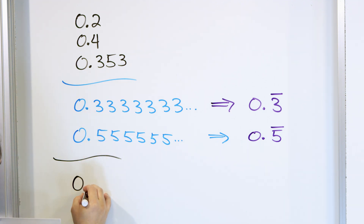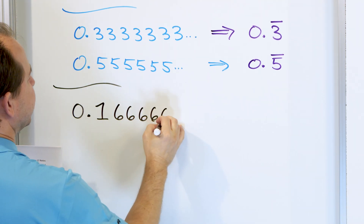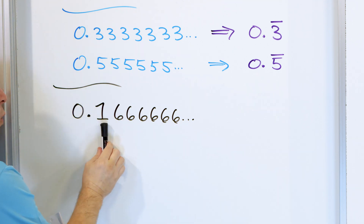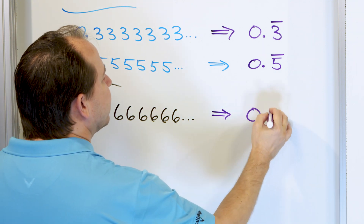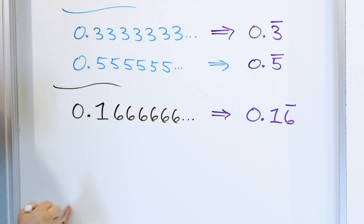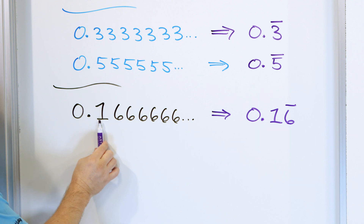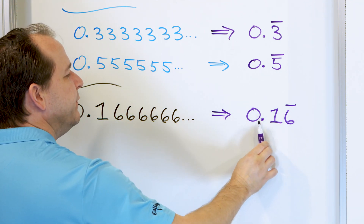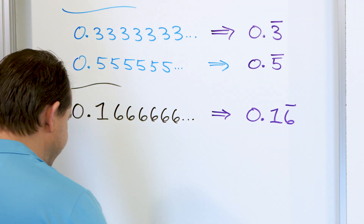What about 0.16666...? The sixes are repeating but the one is not. So you write 0.16 with the bar only over the six. The number one does not have a bar, meaning it doesn't repeat, but the six has a bar meaning it repeats. So this represents 0.16666666, which is exactly what we have.